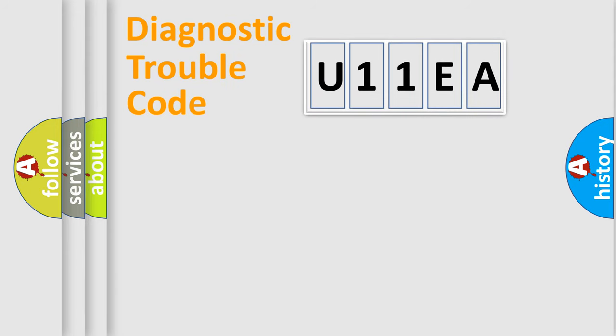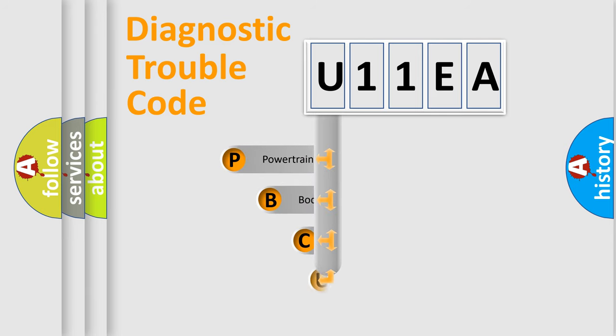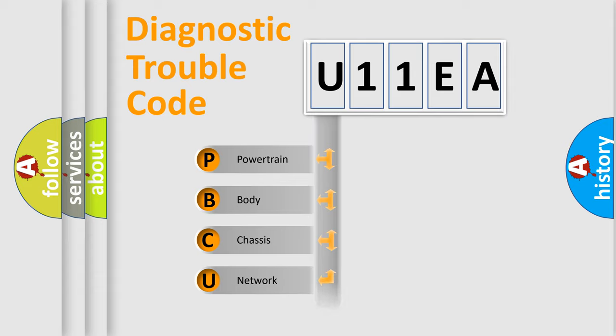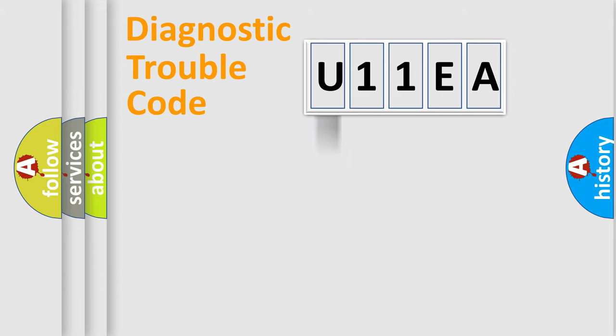Let's do this. First, let's look at the history of diagnostic fault code composition according to the OBD2 protocol, which is unified for all automakers since 2000. We divide the electric system of automobile into the four basic units: Powertrain, Body, Chassis, Network.